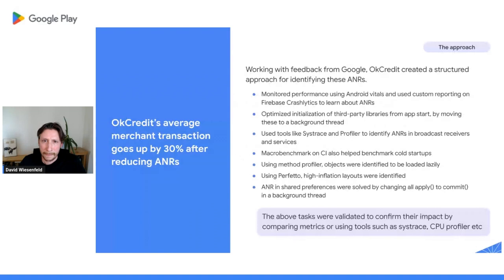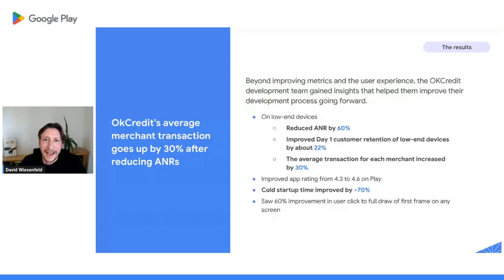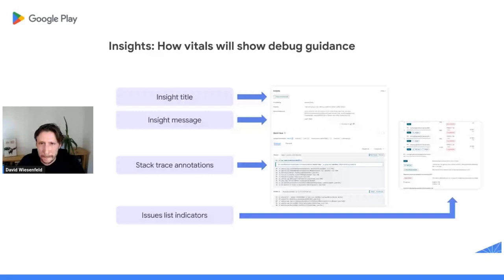Now, let's talk a little bit about why you should address ANRs. You want to keep your game's ANR rate below Play's bad behavior threshold, of course. But ANRs can make it hard for users to engage properly with your app, which can lead to reduced engagement and revenue. Fixing ANRs, conversely, can increase engagement and revenue by ensuring that your users can use your app as it was designed to be used. You can see from this case study how OKCredit increased key business KPIs by reducing ANRs and enabling the users to have a better experience in their app. Now, let's start looking at some common types of ANRs and how to address them. One thing to note is that for each ANR cause that we discuss, Android Vitals will show an insight on the Issue Details page when we detect that particular ANR cause. The insights will comprise a message in the Insights section and some annotations to the stack trace to show you where the problem is and provide some guidance.